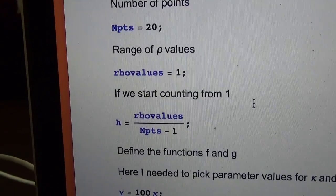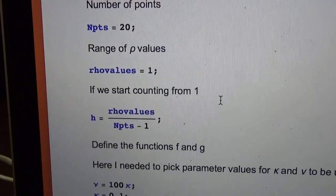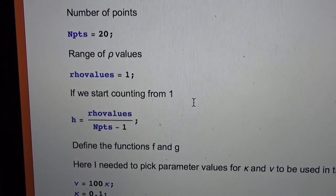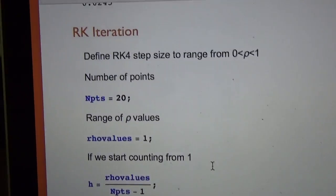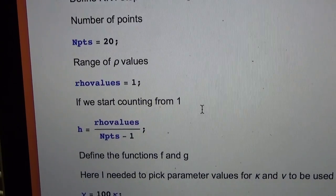H is the step size. So I take the total range and I divide it by the number of points minus 1. That's the size of each step.